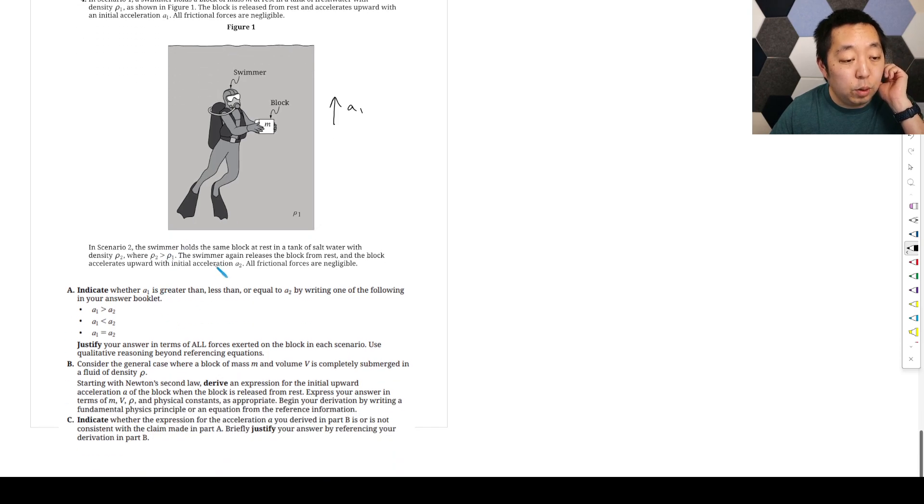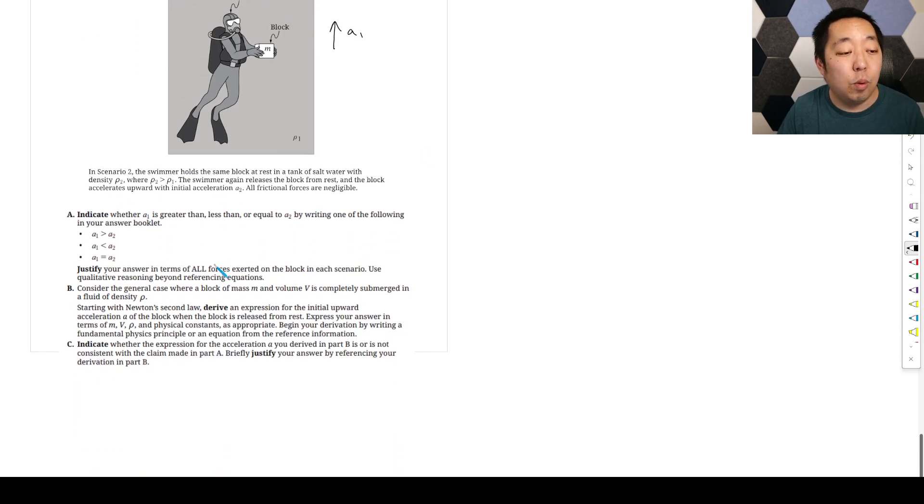Scenario 2: the swimmer holds the same block at rest in a tank of saltwater with density rho 2, where rho 2 is greater than rho 1. The swimmer again releases the block from rest and it accelerates upward with acceleration A2. Indicate whether A1 is greater than, less than, or equal to A2.